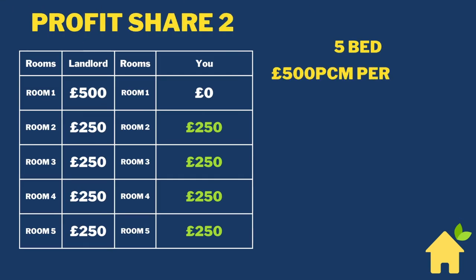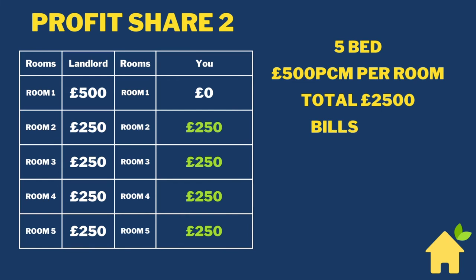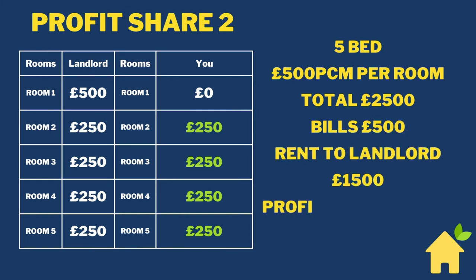This is profit share model two — you can immediately see why I like this one. We've doubled the profit to £1,000 per calendar month. Everything after room one, which is covering the bills, is split 50-50. This is an exceptional method and we've got properties that we use this method on.